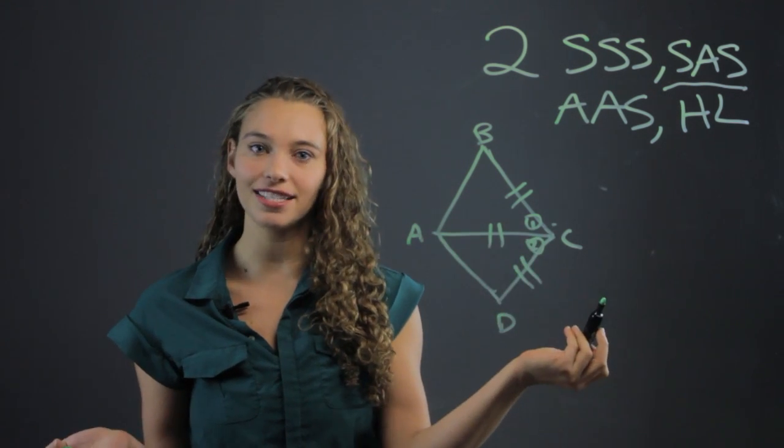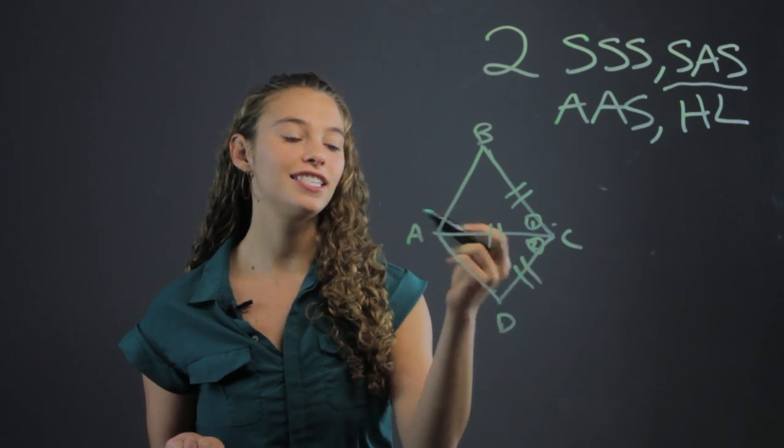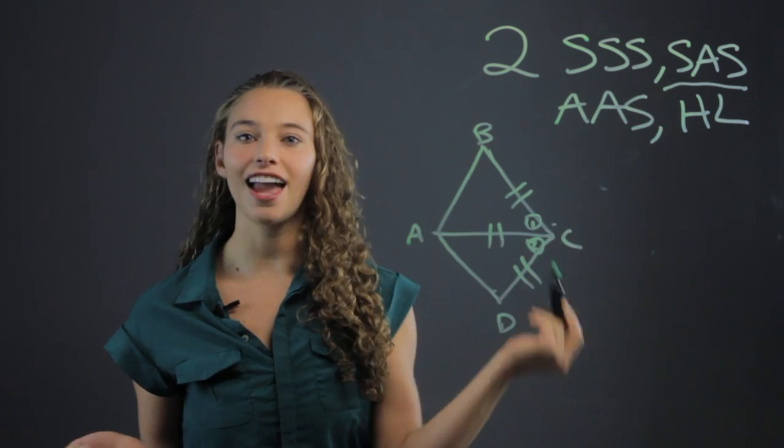And then you can use the reflexive property to prove that AC equals AC, and therefore prove that triangles ABC and ADC are congruent with side-angle-side.